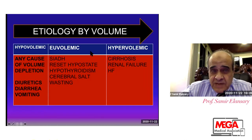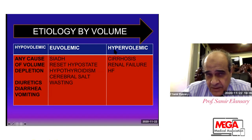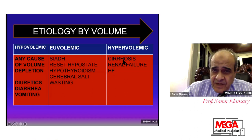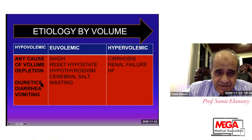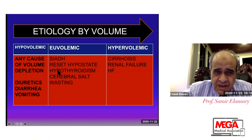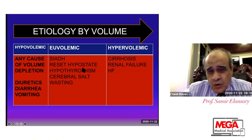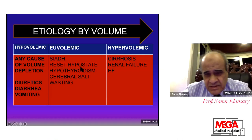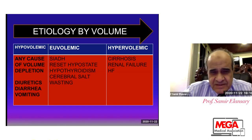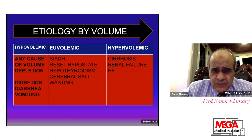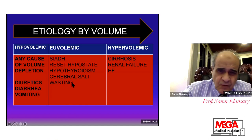Etiology by volume status: we differentiate hyponatremia by asking whether the patient is hypovolemic, euvolemic, or hypervolemic. Hypervolemic causes include cirrhosis, renal failure, and heart failure. Hypovolemic causes include diuretics, diarrhea, or vomiting. If the patient is euvolemic, this is most commonly seen in SIADH, or reset osmostat — some patients normally accept a low serum sodium of 132–134. Patients with hypothyroidism also present with hyponatremia and are euvolemic. Cerebral salt wasting patients may be euvolemic or hypovolemic.